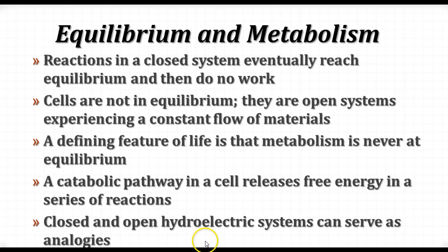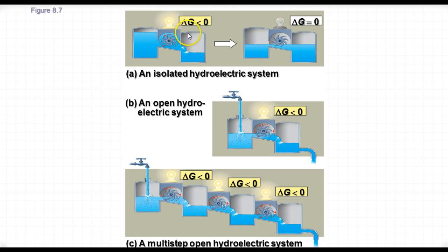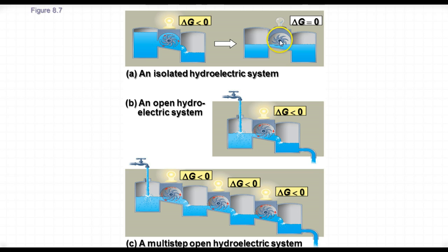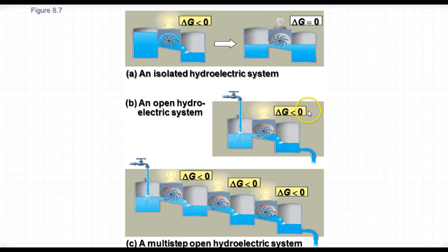Let's look at an analogy of hydroelectric systems. When you have a closed or isolated hydroelectric system, it's going to produce electricity as long as water is flowing across the turbine. Once the water reaches equilibrium in this closed system, there's not going to be any more flow, which means no more electricity will be generated. In this case, delta G will be equal to zero. If you have an open system with an input of water and an outflow of water, then the water is never going to reach equilibrium, and so you can continue to turn the turbine and generate electricity.